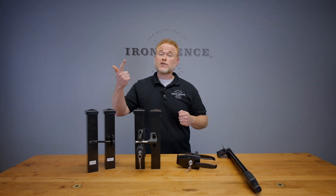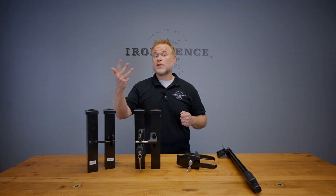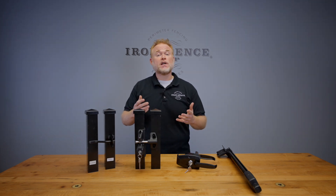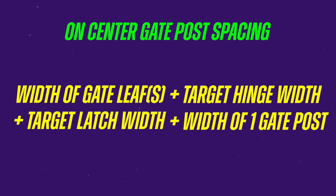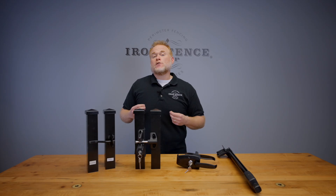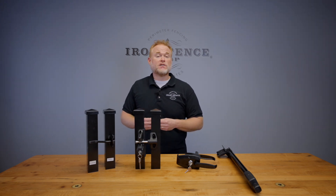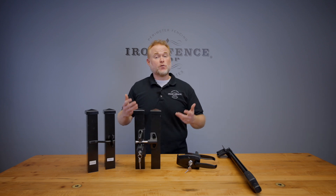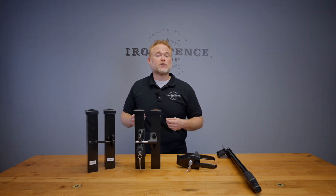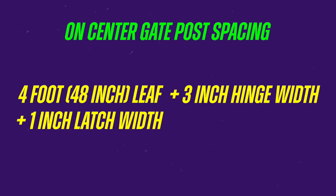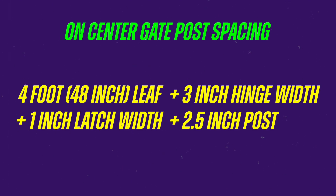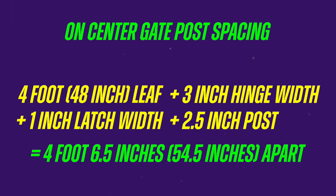Now that you have your gate size, post size, hinge spacing requirement, and latch spacing requirement, we can calculate your on-center post spacing for your gate posts. The formula is: width of the gate leaf, plus the target hinge width, plus the target latch width, plus the width of one gate post. For example, a four-foot wide single gate with 5.5-inch J-bolt hinges, a standard gravity latch, and a two and a half inch post: 48 inches plus three-inch hinge spacing plus one-inch latch spacing plus one two and a half inch post means the middle of our gate post holes will be four foot six and a half inches, or 54.5 inches apart.